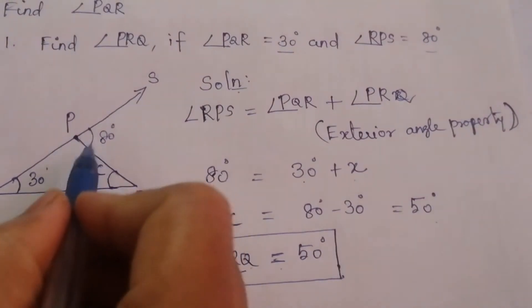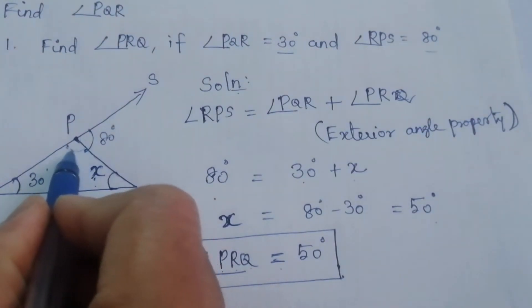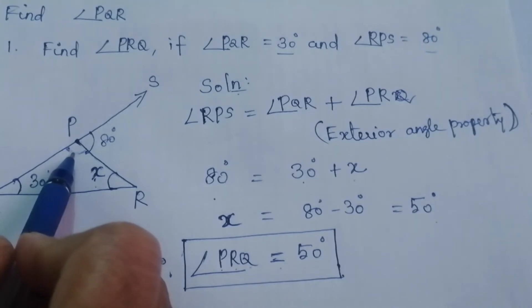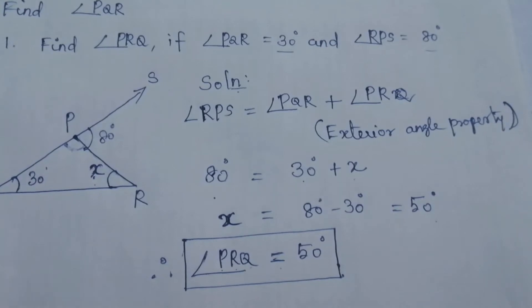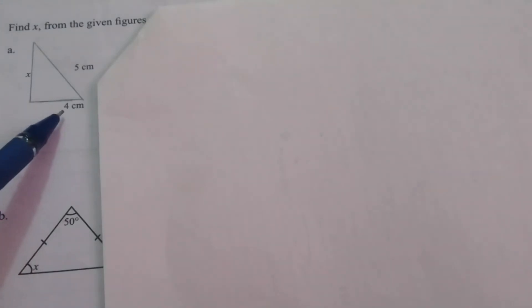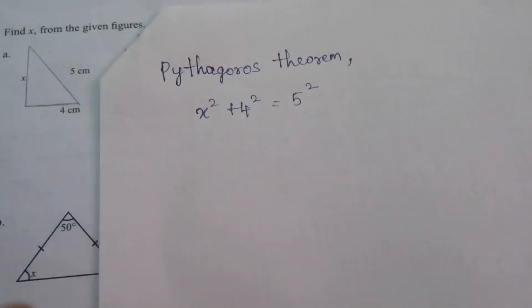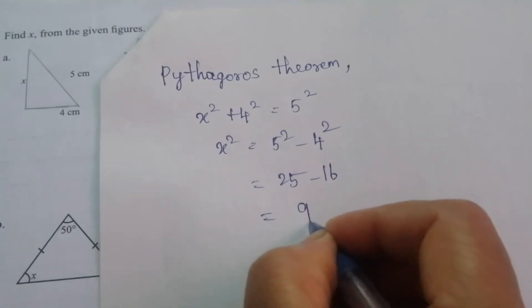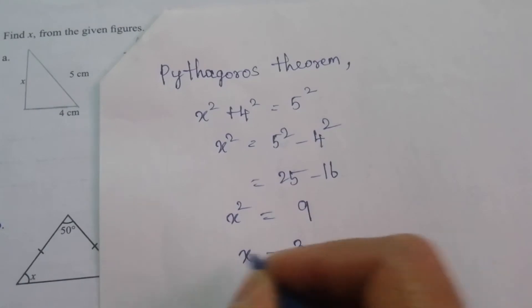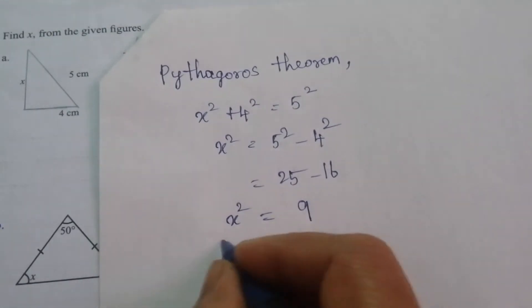We can also find this using linear pair then angle sum property, but the exterior angle method is the shortest. Problem 2: find x from the given figure. This is a right-angled triangle with one side 4 cm, another side x, and hypotenuse 5 cm. By Pythagoras theorem: x² + 4² = 5², so x² = 25 − 16 = 9, therefore x = 3 cm.